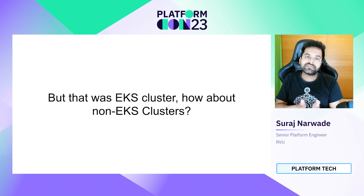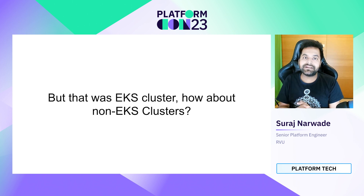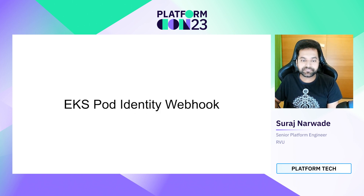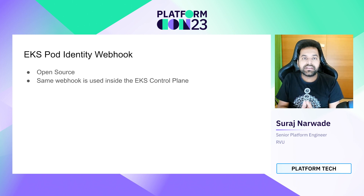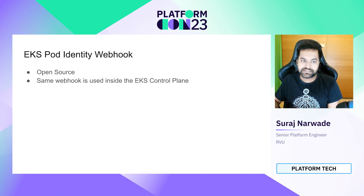The diagram we saw was from the EKS cluster. We now understand what IRSA is, how to set it up with a service account and IAM role, and how it works in an EKS cluster. As the title of the session says — IRSA for non-EKS clusters — let's look at how we can deploy the same thing in a non-EKS cluster, meaning an EC2-based Kubernetes cluster. The webhook we saw is also known as the EKS pod identity webhook. It is an open source project by AWS — the exact same webhook used inside the EKS control plane — and we are using the same thing for our non-EKS cluster as well.